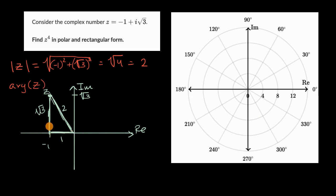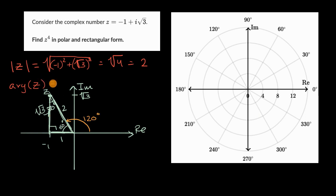You might immediately recognize this as a 30-60-90 triangle, because in a 30-60-90 triangle the short side is half of the hypotenuse and the long side is square root of three times the short side. So we know this is a 60-degree angle and this is a 30-degree angle. If this angle inside the triangle is 60 degrees, then the argument here must be 120 degrees. So the argument of z is 120 degrees.